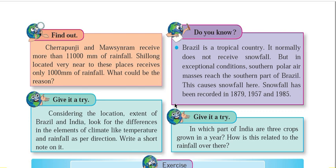So in this way we have completed the entire chapter on climate. We have seen the climatic variations of both countries and how different seasons form in India due to its climatic conditions. Please revise all these concepts properly, and if you have any doubts, comment in the comment section — I will definitely answer. See you in the next video session. Till then, take care. Bye.